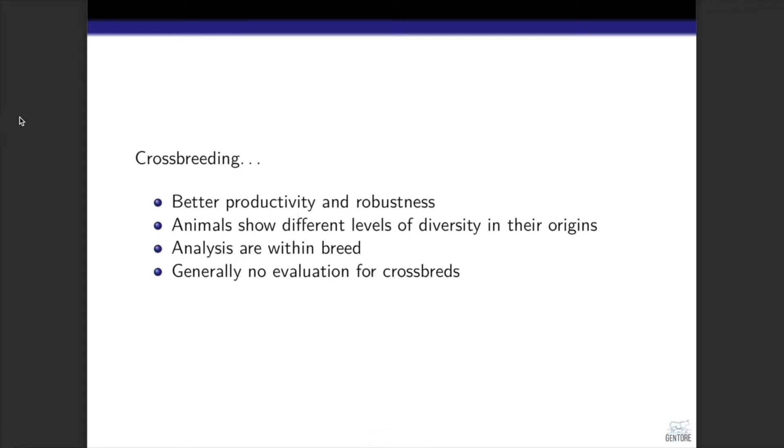Crossbreeding is an efficient strategy for achieving better productivity and robustness at the animal and system level. In dairy cattle populations where crossbreeding has been used, animals show different levels of diversity in their breed of origins. If you consider rotational crossbreeding, where crossbreed dams are mated to purebred sires from different pure breeds, the genetic composition of these crossbreed animals becomes an admixture of the breeds, depending on which sire breed is used at each rotation cycle.